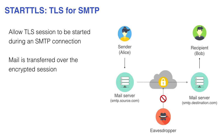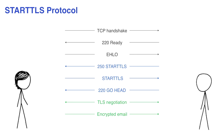Das erste und bekannteste Protokoll ist STARTTLS – TLS für SMTP. Es ermöglicht eine verschlüsselte Übertragung der E-Mail. Das Protokoll ist ziemlich einfach: man fängt eine normale TCP-Sitzung an, macht einen Handshake, sendet ein Hello. Der Server sagt dann STARTTLS, und dann wird TLS-Verschlüsselung verhandelt und man kann die E-Mail raussenden.